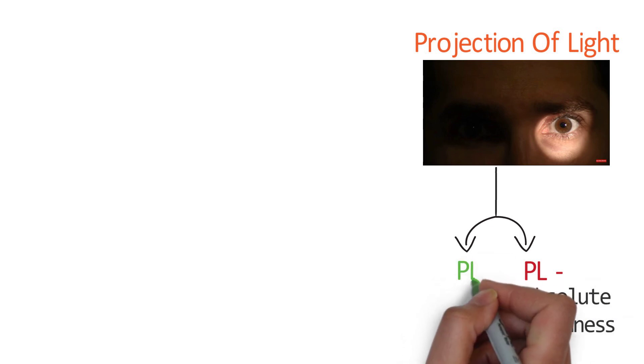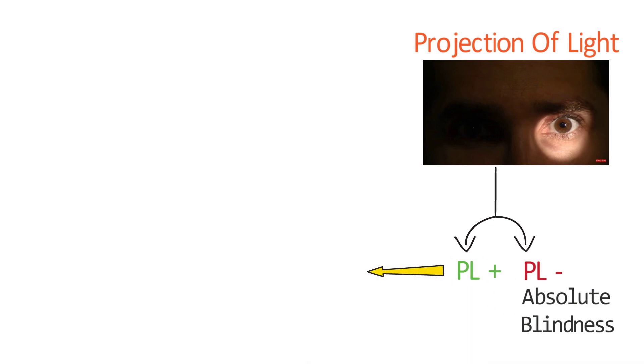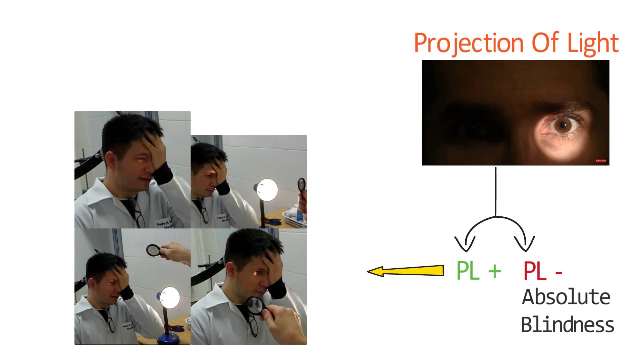If he can perceive light, he is known as PL positive. In PL positive patients, we look for PR, projection of rays. Light is thrown from all quadrants, inferior, nasal, superior and medial. And we look for which part of the retina is functioning.